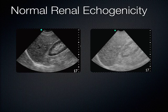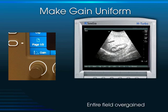Here's an image that's over-gained. As novices, we tend to want to over-gain the machine to see better. Also, when we're in a brightly lit room, the tendency is to turn up the gain — I see this a lot in my trauma bay. But you can wash out the image, making it really difficult to see how the cortex of the kidney is less echogenic than the liver.